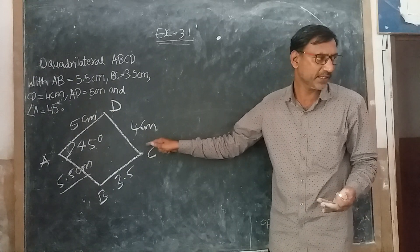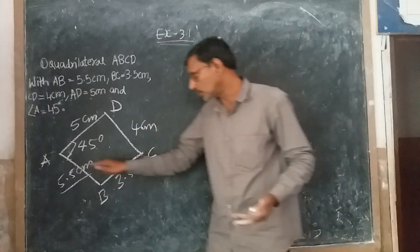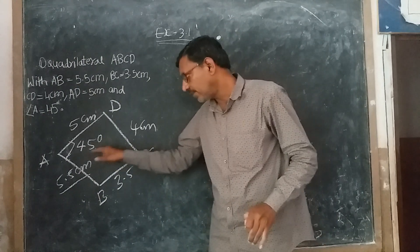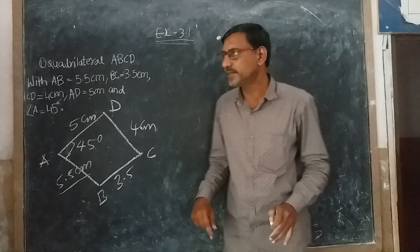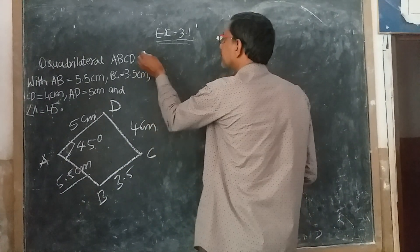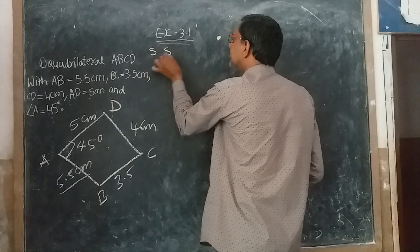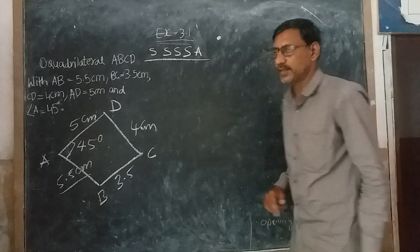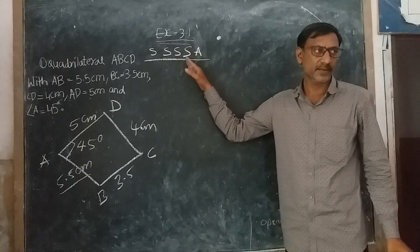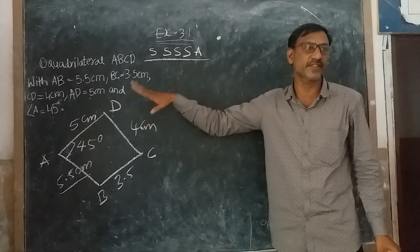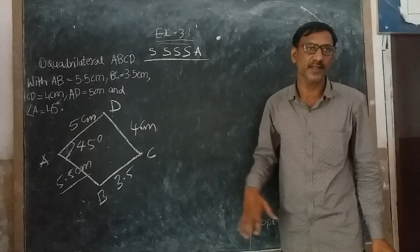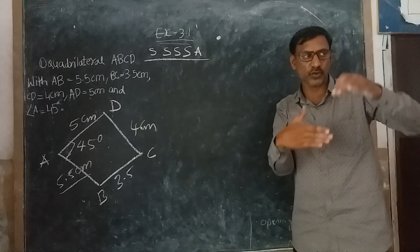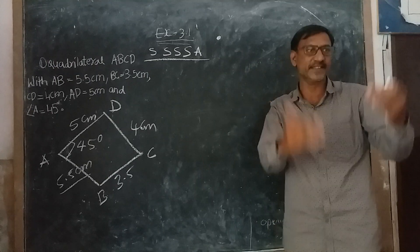This is one type of construction — if we have four sides and one angle. By this diagram, we have four sides and one angle. This is also called S, S, S, S, A — construction of quadrilaterals. How many S's? Four sides and one angle. So this is one type of construction. We have many types of constructions, which we will discuss later.